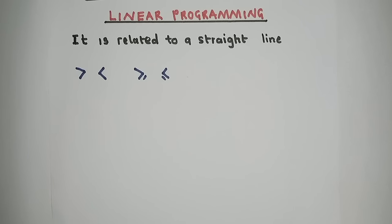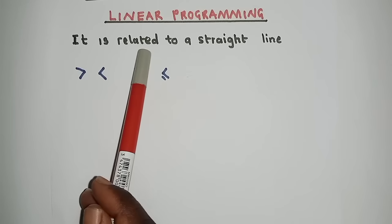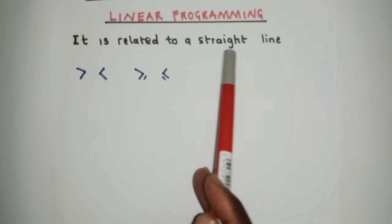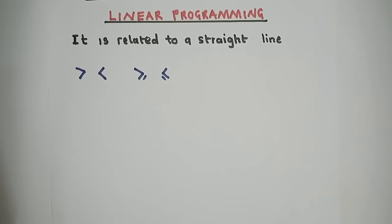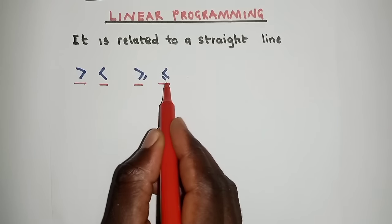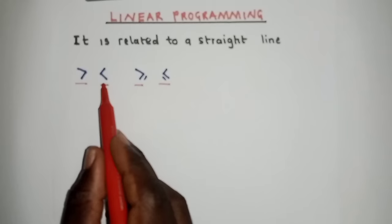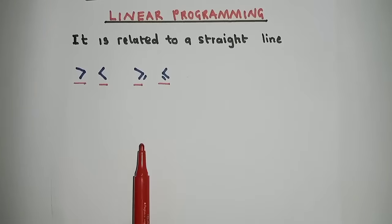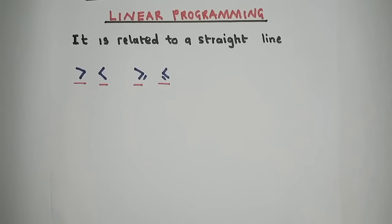Let me talk about linear programming. We know that this is actually related to a straight line. What makes linear different from a straight line is these signs: greater than, less than, greater than or equal to, and less than or equal to. These are the things that make it linear, different from straight lines.